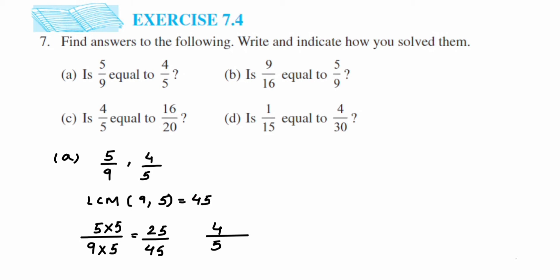For the second number 4/5, we need to make the denominator 45. Since 5×9 is 45, we multiply 9 in both numerator and denominator: 4×9 is 36 and 5×9 is 45, giving 36/45. Now denominators are the same — compare the numerators: 25 and 36. They are not equal, which means the fractions are also not equal. So 25/45 is not equal to 36/45.